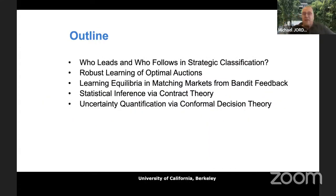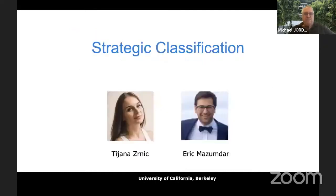Here's my outline: I have five research vignettes. Rather than going through one in detail, I'll give you enough of a picture of each. All of these are papers on the arXiv written within the last year — pretty recent research. I'm going to start with strategic classification, and I think the highlight will be the work on contract theory.